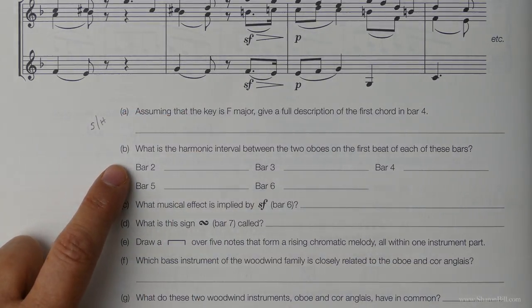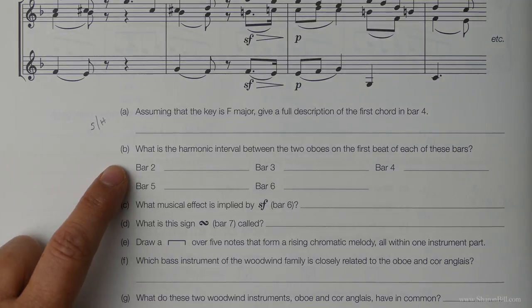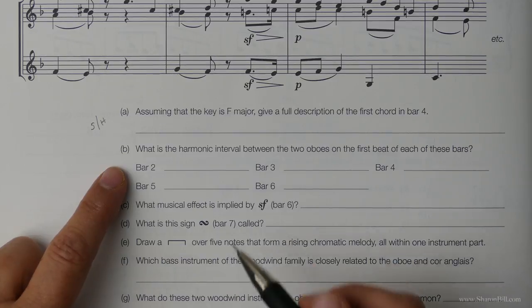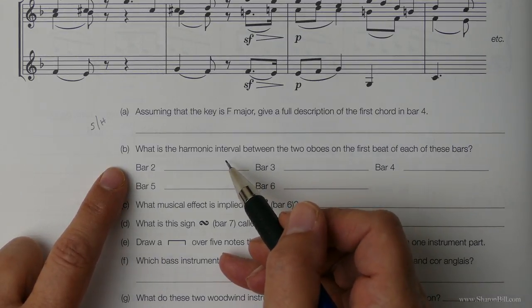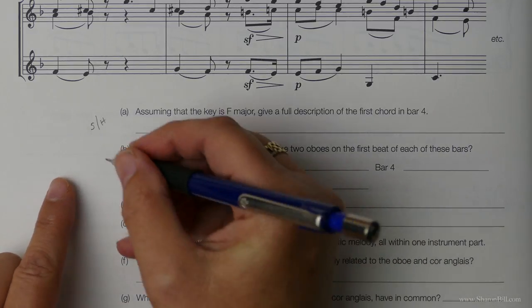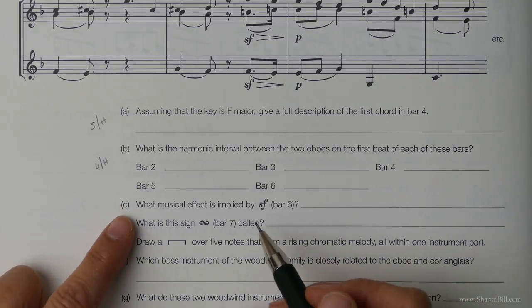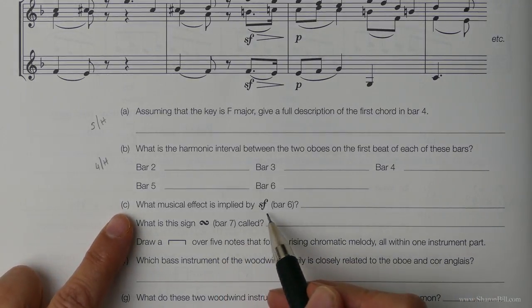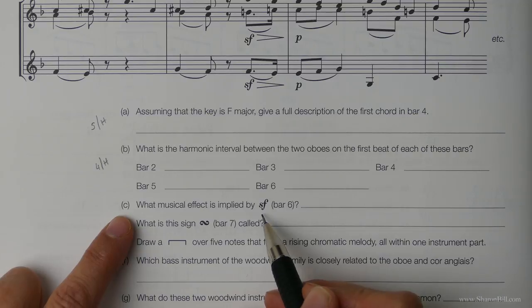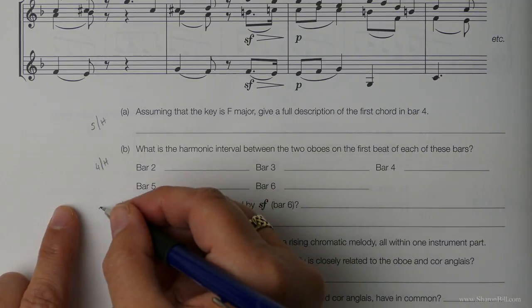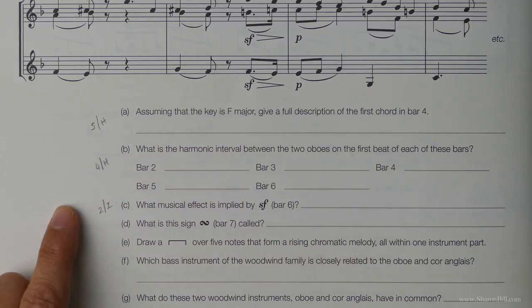We're asked what the harmonic interval between the two oboes on the first beat of each bars. And so harmonic intervals we first have a proper look at those in all its detail in grade 4 section H. We're asked about this musical term, the performance direction SF. We first look at that in grade 2 section I.